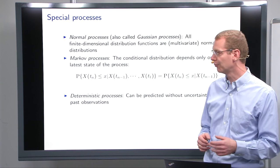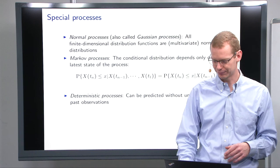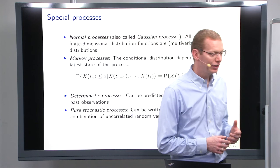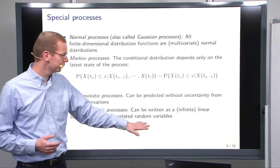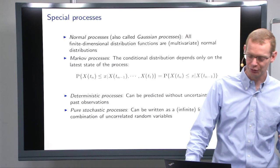A deterministic process is a process where we can predict without uncertainty, just that given the past observations, then we can predict what's going to happen in the future. Now, we also have so-called pure stochastic process. And then we are looking at linear combinations of uncorrelated random variables and potentially an infinite set of linear combinations. And that's what we're going to spend the most time on, things that we can look at as a pure stochastic process.